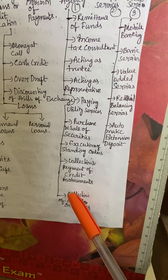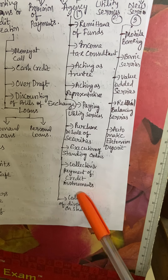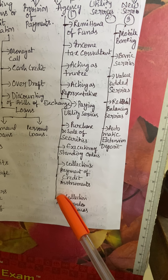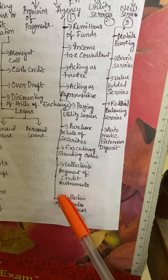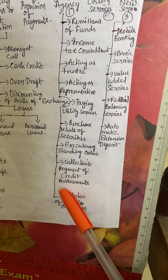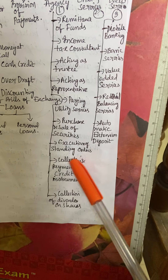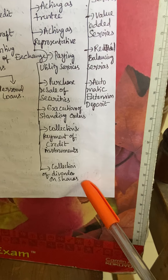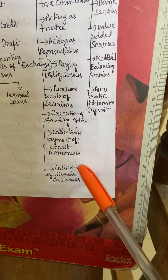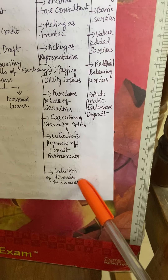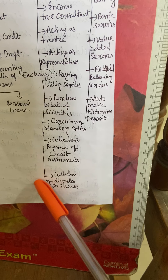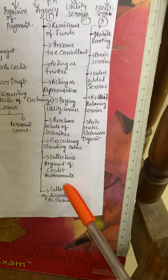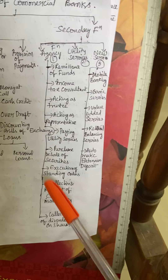Collection of payments of credit instruments — any interest payments or dividends, the bank will collect from third parties on behalf of the customer. Collection of dividends of shares — any dividends on particular shares, bonds, or any kind of incomes, the bank will collect on behalf of the customer. Also purchasing and sale of securities — any bonds or securities, the bank purchases on behalf of the account holder, acting as a mediator. Exchange of standing orders — any orders given by the deposit holder, the bank will act as a mediator on their behalf.